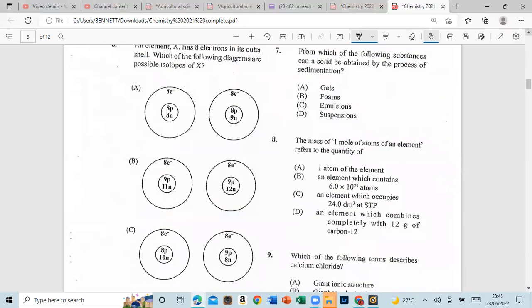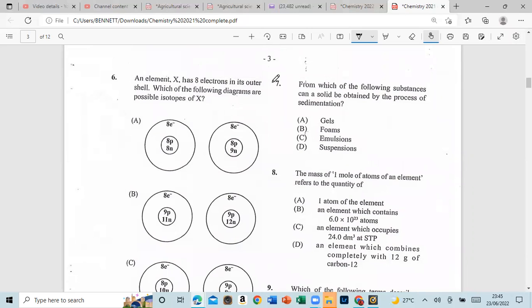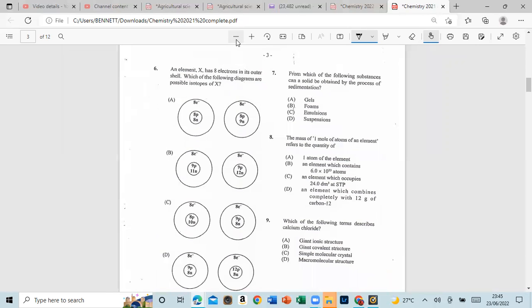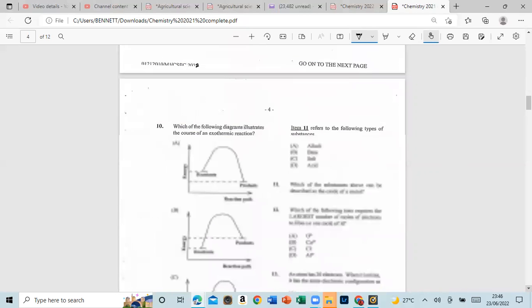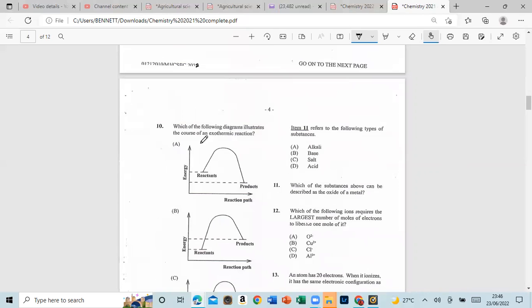At least should be 15. An element X has three electrons in its outer shell. Which of the following diagrams are possible isotopes of X? That's number seven. From which of the following substances can solid be obtained by the process of sedimentation? And that could be in suspension. Number eight, one mole of an element refers to the quantity which contains 6.50 times 10 to the 23 atoms. Describe calcium chloride, and that is a giant ionic structure. Number 10, which of the following diagrams illustrates the course of an exothermic reaction? This is B.